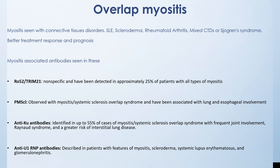Overlap myositis is seen with connective tissue disorders like lupus, scleroderma, rheumatoid arthritis, Sjögren's syndrome, or mixed connective tissue disorder. Among all forms of inflammatory myopathy, this one has the best treatment response and prognosis. Associated myositis-associated antibodies include Ro52, PM-Scl, anti-Ku, and anti-U1-RNP antibodies, which can help identify the primary connective tissue disorder causing the inflammatory myopathy.